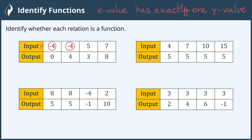So the x value of negative 4 has the y value of 0 and the y value of 4, so it violates the definition. That means this relation is not a function.